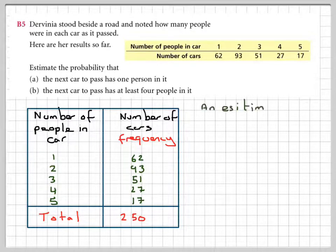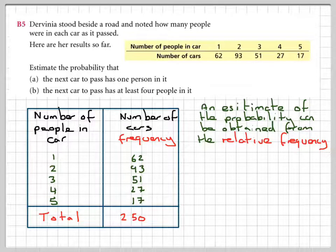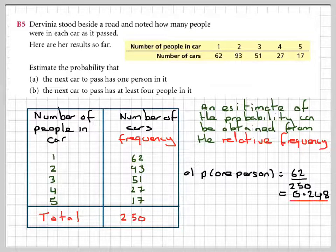Then an estimate of the probability can be obtained from the relative frequency. So we want the probability of one person. So there's 62 out of a total of 250, and as a fraction that comes down to 0.248.